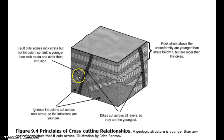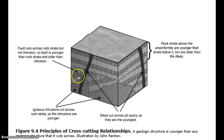Then I see that there is a fault here, right here, that also cuts across the tilted strata. However, it does not cut across either the unconformity here or the igneous intrusion here. Thus, the fault is younger than the unconformity and the tilted rock units, but older than the igneous intrusion.